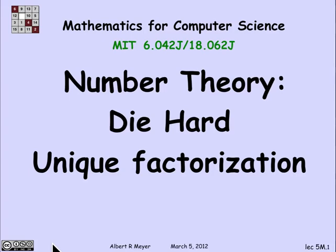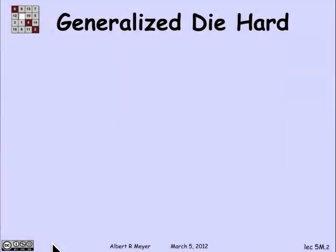Now we're ready to put together the facts that the GCD is a linear combination to prove two cool results, one fun and the other important and serious. Let's begin with the Die Hard example.